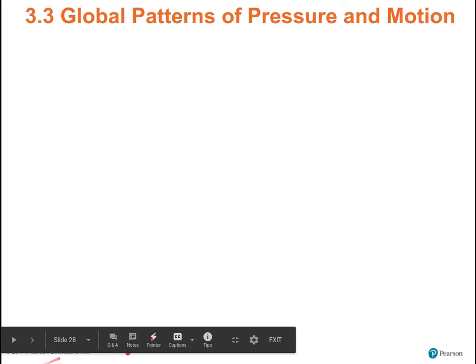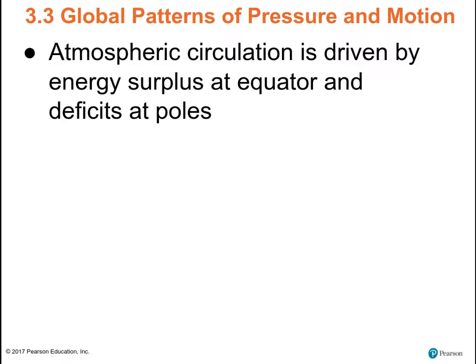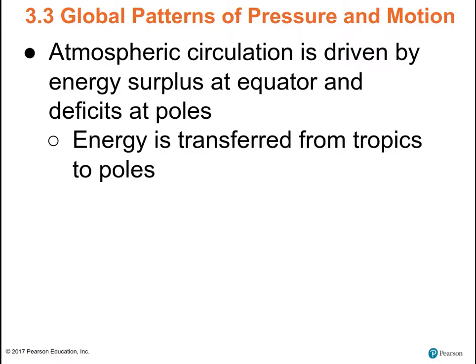Wind patterns in general are driven by an energy surplus at the equator and an energy deficit at the poles. Energy is transferred from the tropics to the poles through mechanical movement of air molecules and water molecules. Ocean currents are set up — surface currents are a function of wind. Also, latent heat plays a role: as water evaporates from the tropics, it gets transported to the mid-latitudes and Arctic. When that water vapor condenses, it releases heat into the atmosphere in the mid-latitudes and sub-Arctic.